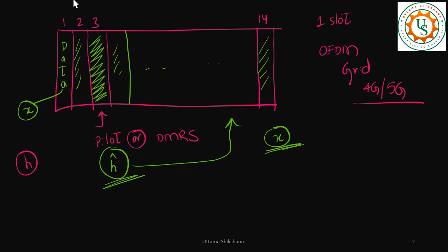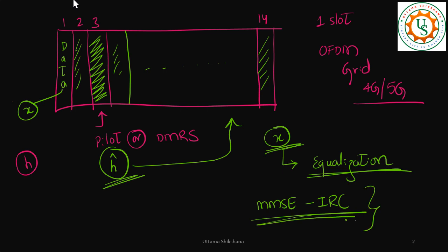What is the signal processing block which we need to use? That is equalization. In my previous series 4G 5G MIMO OFDM, we have spoken about many equalization techniques like zero forcing, MMSE, MMSE IRC, and we have seen that for practical consideration MMSE IRC is the one which we should be using.